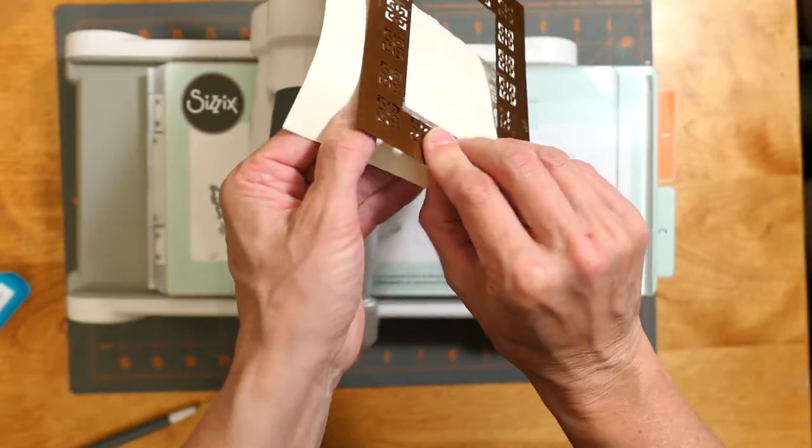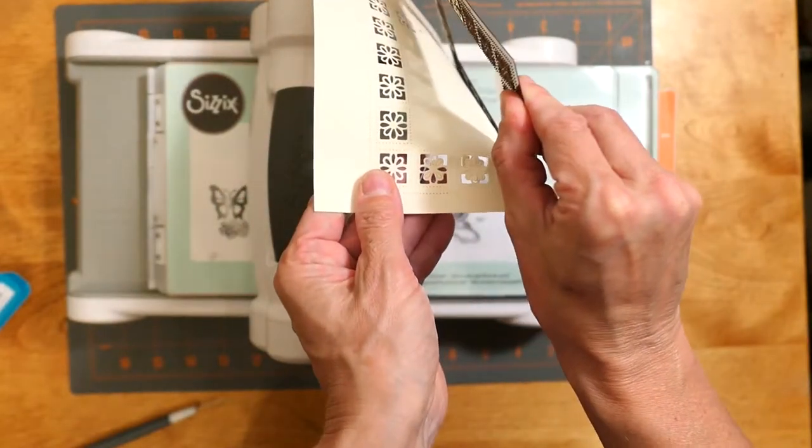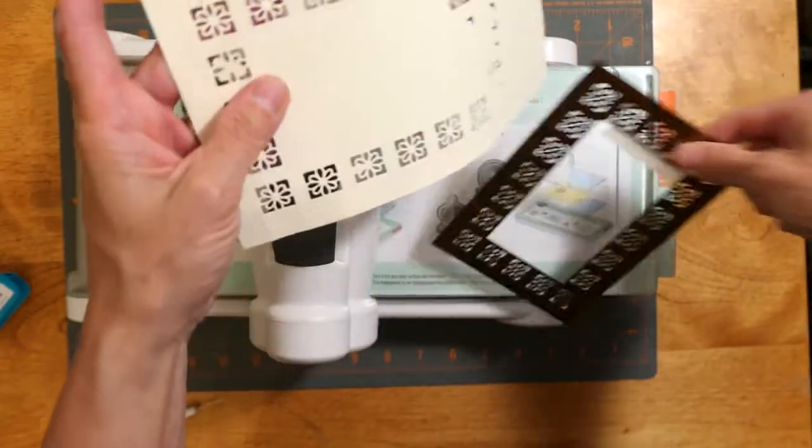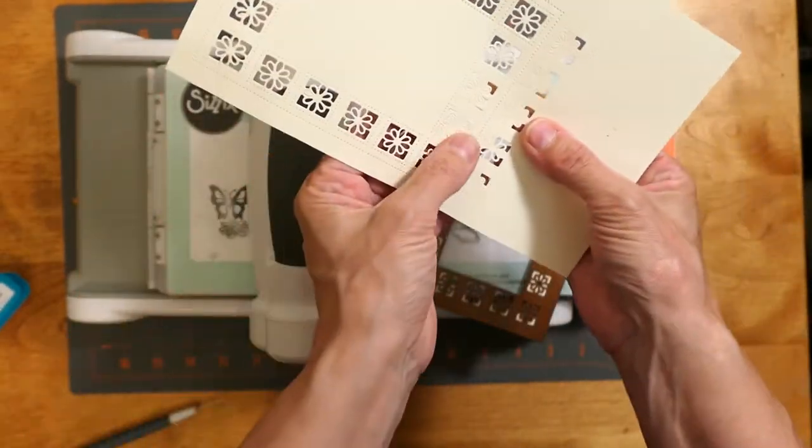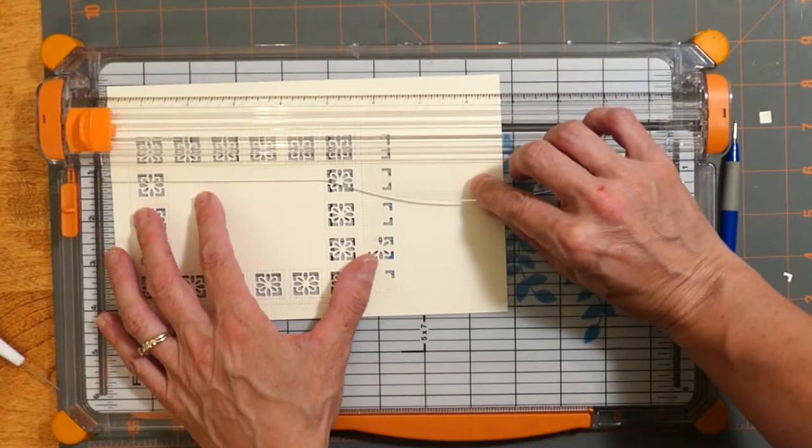After I die cut it again, I just trimmed around the edge of the frame. There's a little pinpoint that goes around the edge, so I wasn't concerned about that first die cut that I had made because it was just going to be trimmed off anyway.